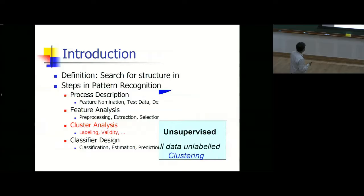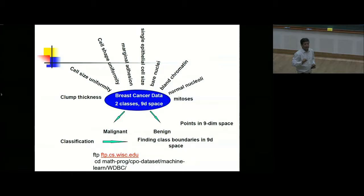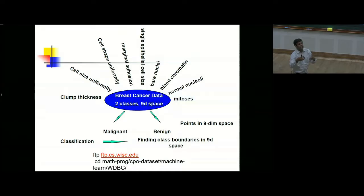A practical example: data from the University of Wisconsin in Madison — breast cancer cells. Depending on the nature of the cell, you must tell whether it is malignant or benign. A doctor would identify eight or nine important attributes: clump thickness, cell size, cell shape, and so on. These nine features define a 9-dimensional space for classification.